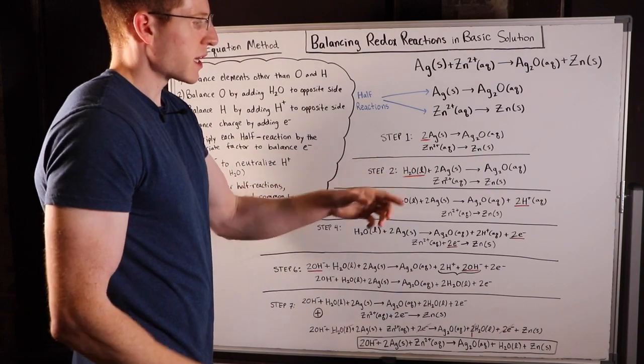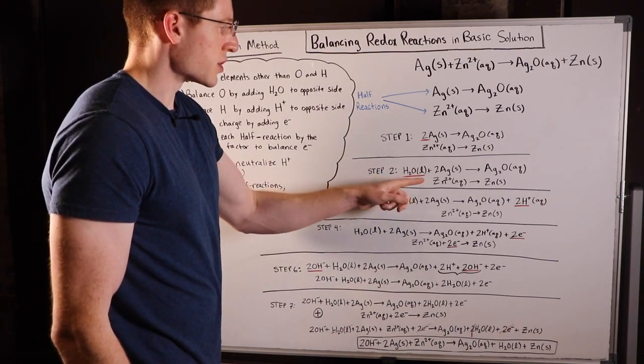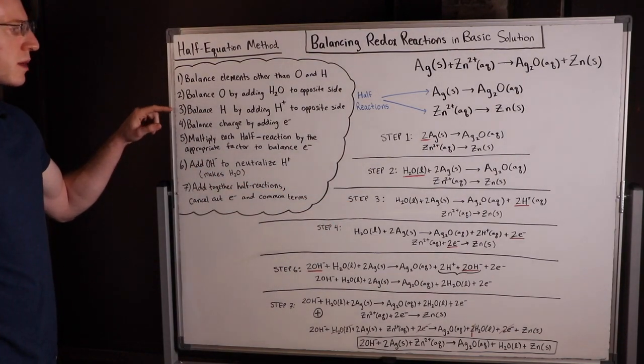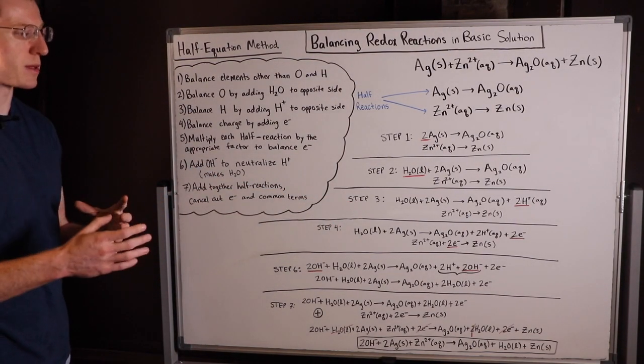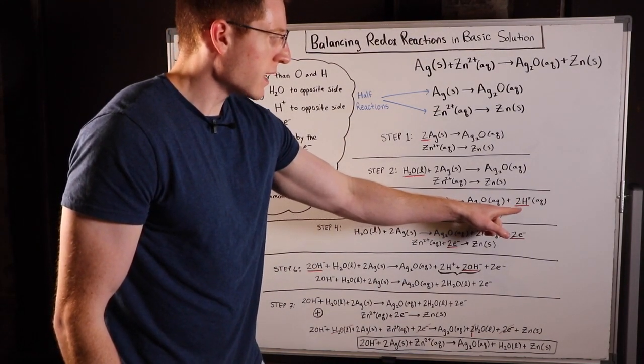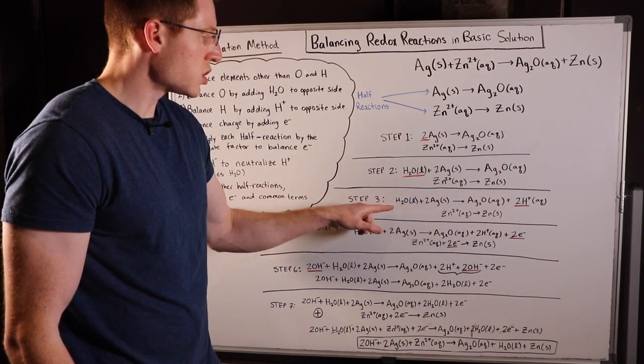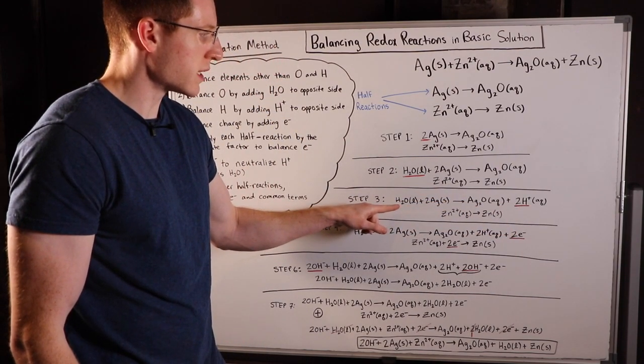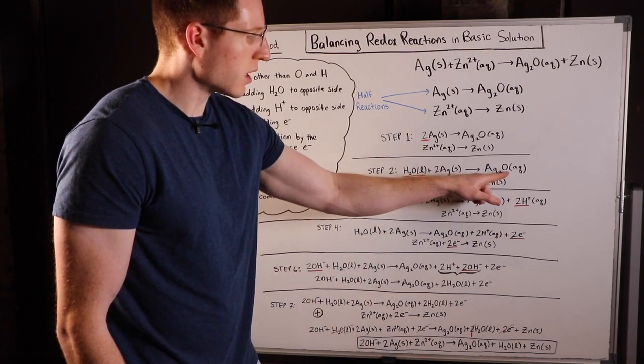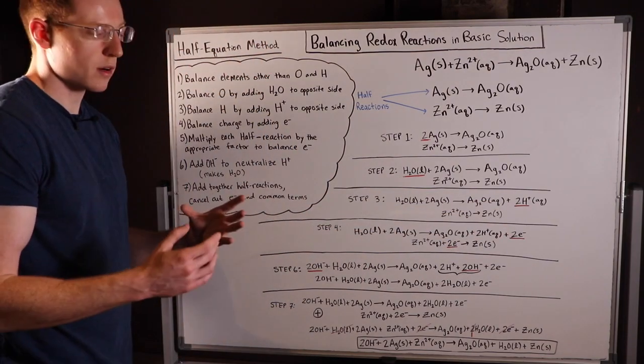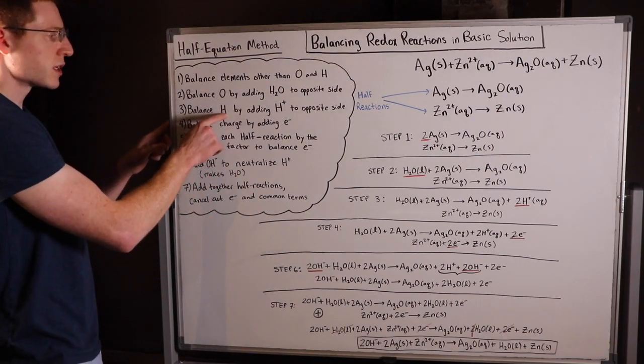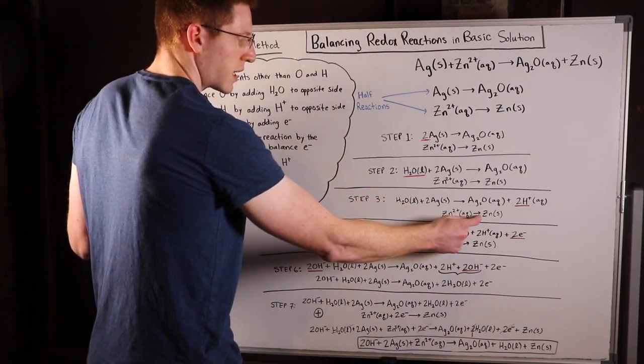In the zinc equation we actually don't have any oxygens to balance, so this step is actually unnecessary for the second equation. Step three: we balance hydrogen by adding hydrogen ions to the opposite side. You can see in this equation here I've added two hydrogens over here because I had two hydrogens over here from the water that I needed to balance out. Back in step two we had two hydrogens here but none over here, that's why you add in the two hydrogen ions on the product side to balance these two hydrogens out. Again we don't have any hydrogens that are necessary to balance in this second equation.